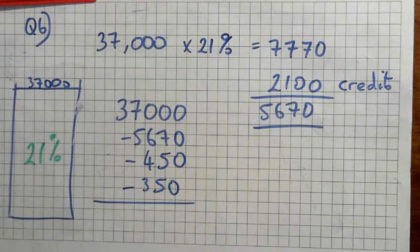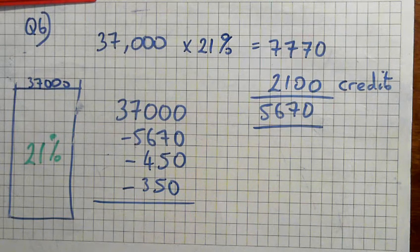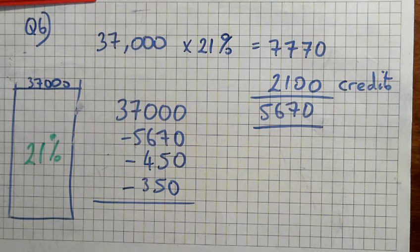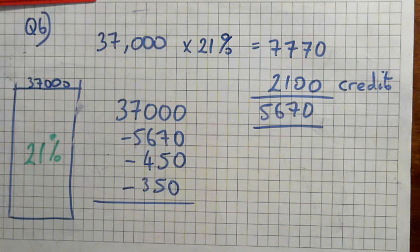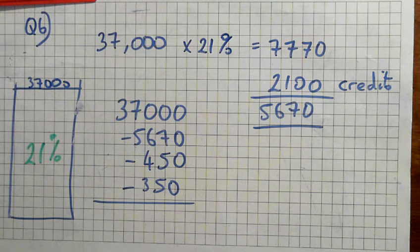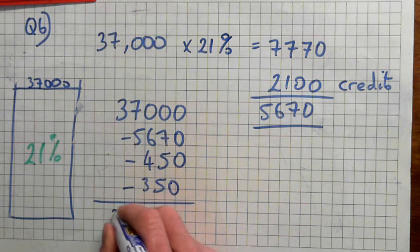All right. So 37,000 minus 5670 minus 450 equals 30,530.